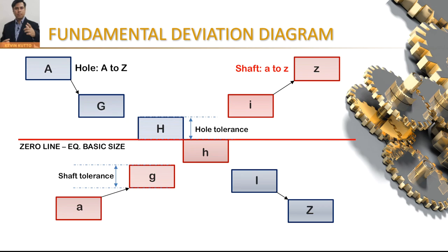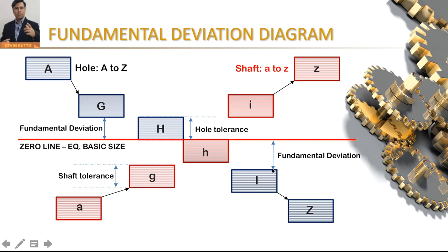By combining different blocks we get different fits. The key term here is fundamental deviation: whichever deviation is closer to the zero line is the fundamental deviation. For example, for the G block, the lower deviation is closer to zero, so it is the fundamental deviation. For the I block, the upper deviation is closer, so that is the fundamental deviation. In a notation like 120 H7/g5, H and g are the blocks for hole and shaft, while 7 and 5 are the tolerance grades.